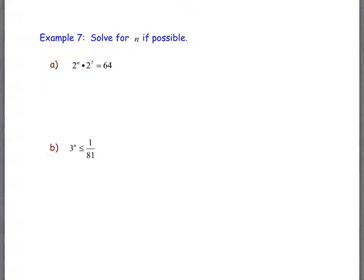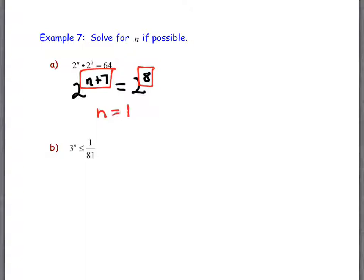Same base — I can add the exponents: n plus 7. Over here on this side, I have 64, which is not written as 2 to a power, but that's what I want. If you don't know it off the top of your head, you can use a calculator and try 2^5, 2^6, 2^7, 2^8 — you'll find that 64 is 2^8. Then you compare the exponents: what would n have to be to make n plus 7 equal to 8? It's 1. n equals 1.